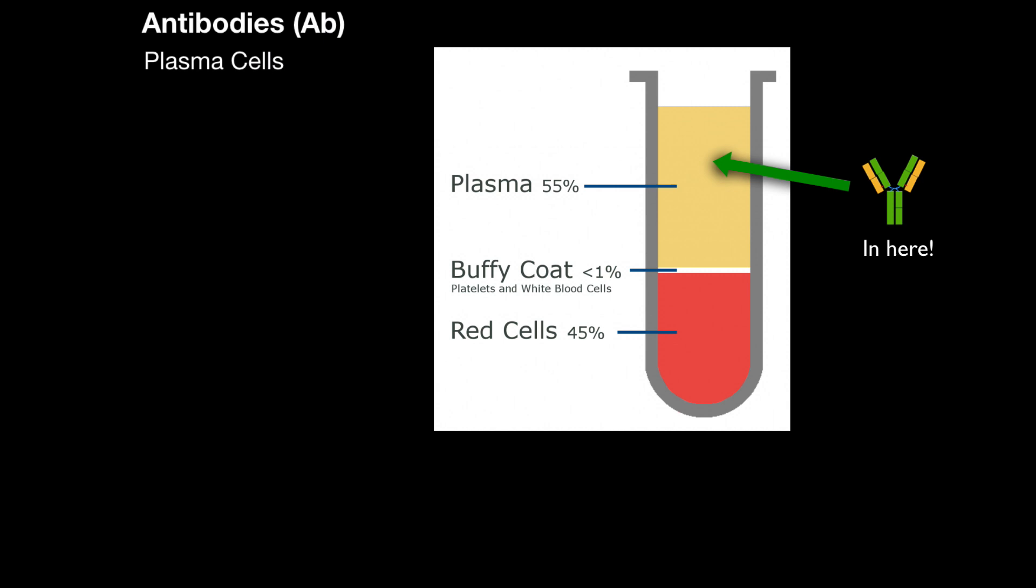To understand the different immunoglobulins we have in our body, I feel like it's most natural to know where they come from first. So, we've got our B-cells right here, chilling in the cortex of the lymph node, I'll show you a scheme later.